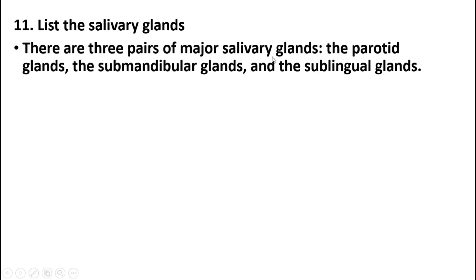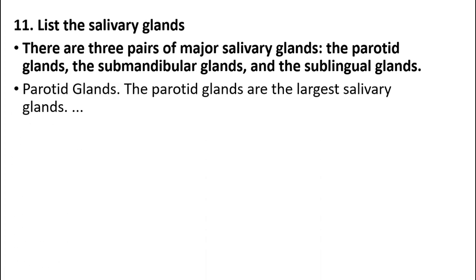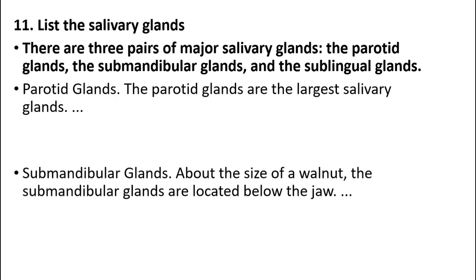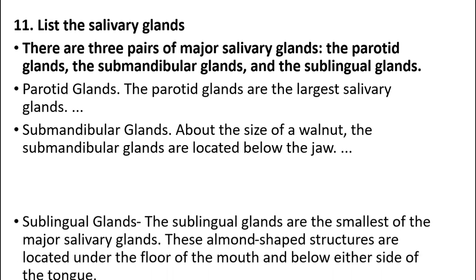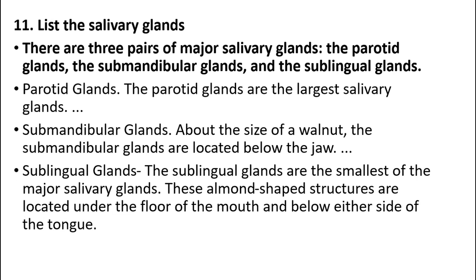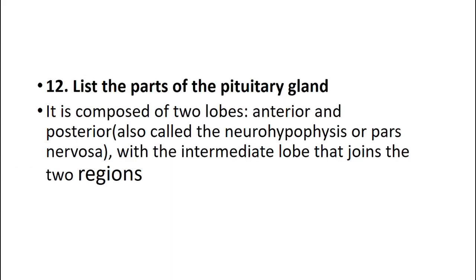Salivary glands. There are three pairs of major salivary glands: parotid glands, submandibular glands, and sublingual glands. Parotid glands are the larger salivary glands. Submandibular glands are about the size of a walnut and are located below the jaw. Sublingual glands are the smallest of the major salivary glands; these almond-shaped structures are located under the floor of the mouth below either side of the tongue.